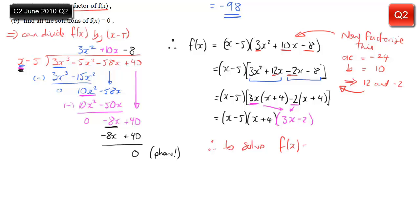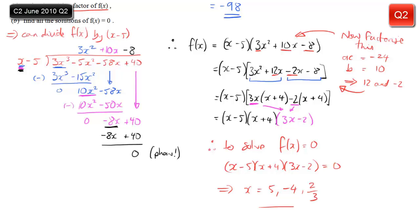So I've factorized f(x). All that remains is to solve the equation — put this factorized form equal to 0. Because it's factorized, I can read off three solutions: from the first bracket, x equals 5; from the second bracket, x equals minus 4; from the third bracket, x equals 2 thirds. And those are my solutions.